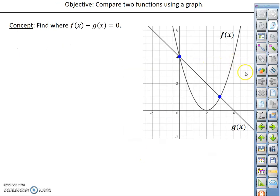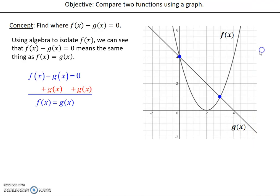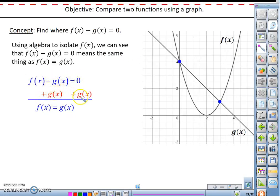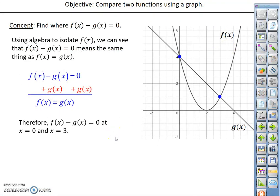Now we're into the last part of the lesson. Here we're looking at finding where f of x minus g of x equals 0. Mathematically, this means the y values of f of x and g of x, when subtracted, equal 0 — and the only way that happens is if they are the same. So symbolically, this means the same thing as where f of x equals g of x. We could add g of x to both sides, giving us f of x equals g of x. So f of x minus g of x equals 0 at x equals 0 and x equals 3 — the x coordinates of the points of intersection.